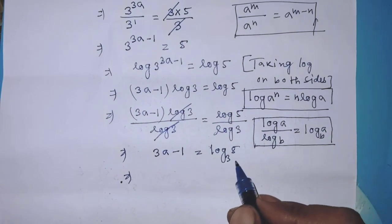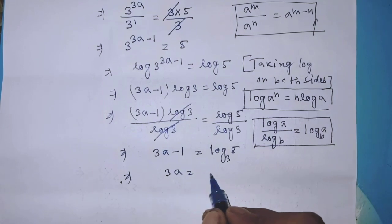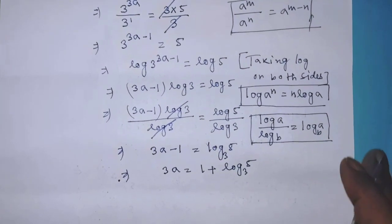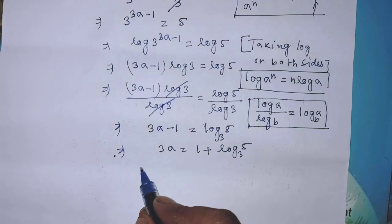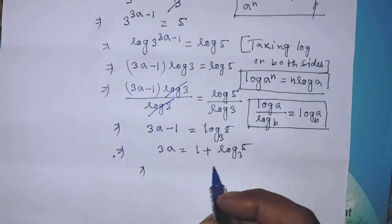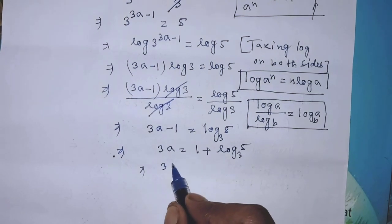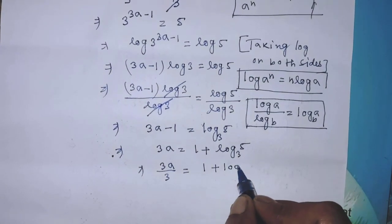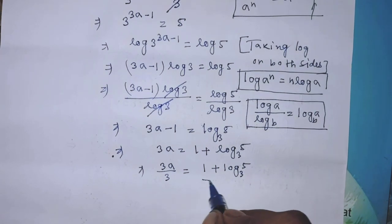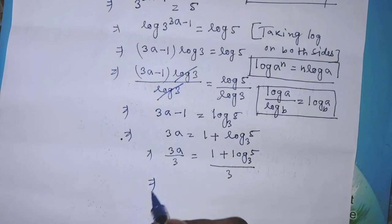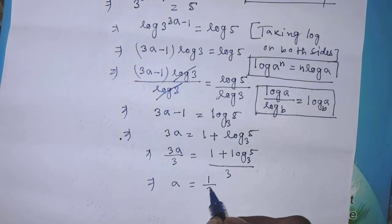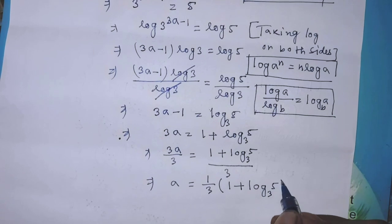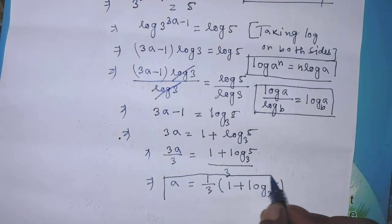Now we transpose minus 1 from the left hand side to the right hand side, then it will be: 3a is equal to 1 plus log of 5 to the base 3. We divide both sides by 3, so: a is equal to one-third times 1 plus log of 5 to the base 3. This is our final answer.